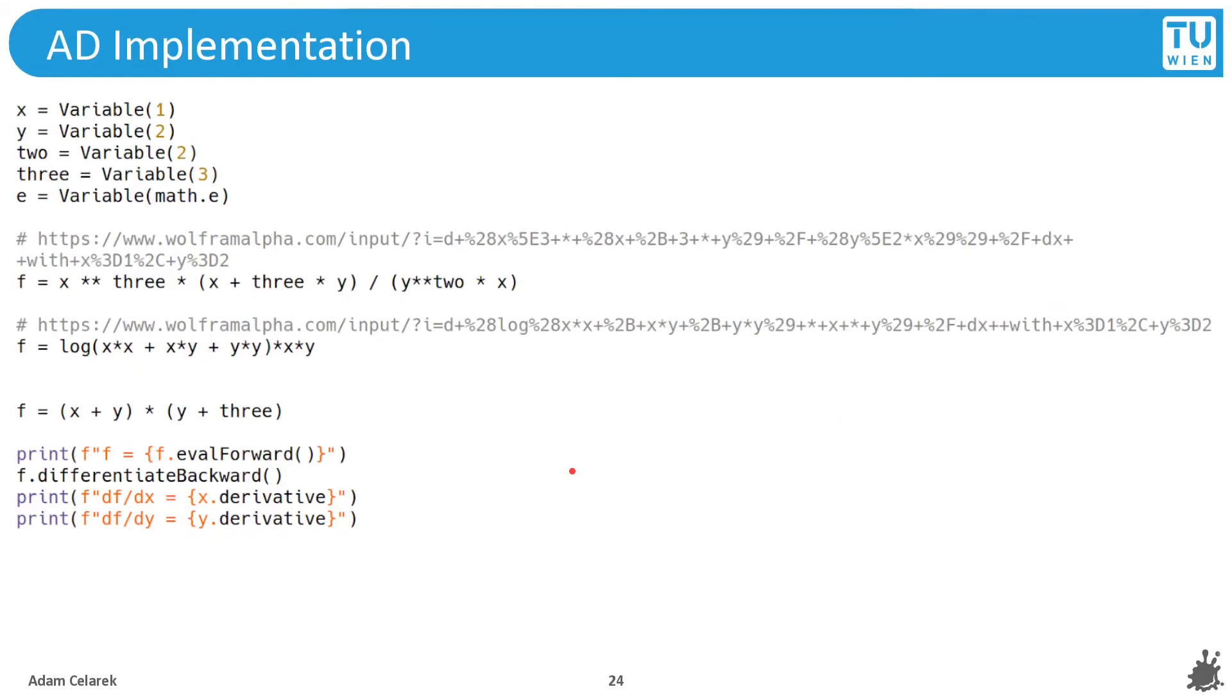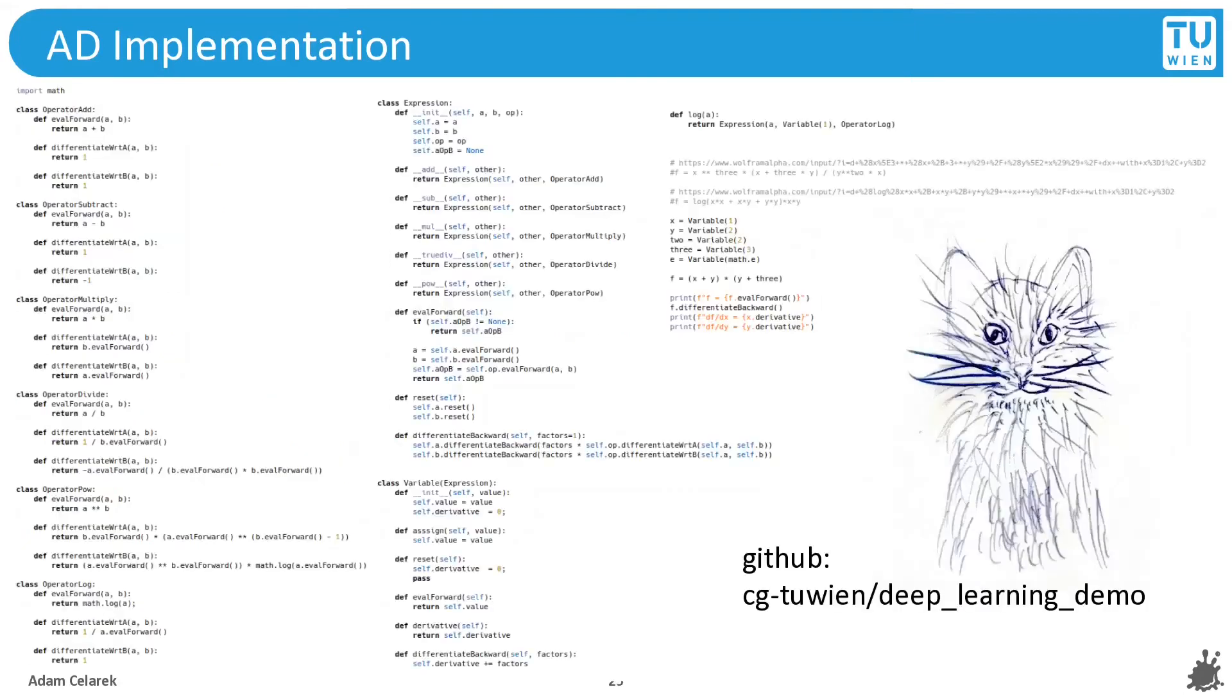What is left is the variable. This is also the terminal of the recursion. You see, in differentiate backward, we simply add up the derivatives. In evaluate forward, we simply return the value of the variable. That's it. Here are the kind of expressions that can be evaluated this way. I've only added some more operators and the log function, but you can go further if you want. Here you can see the whole code, and if you want to take a closer look, it is on GitHub.